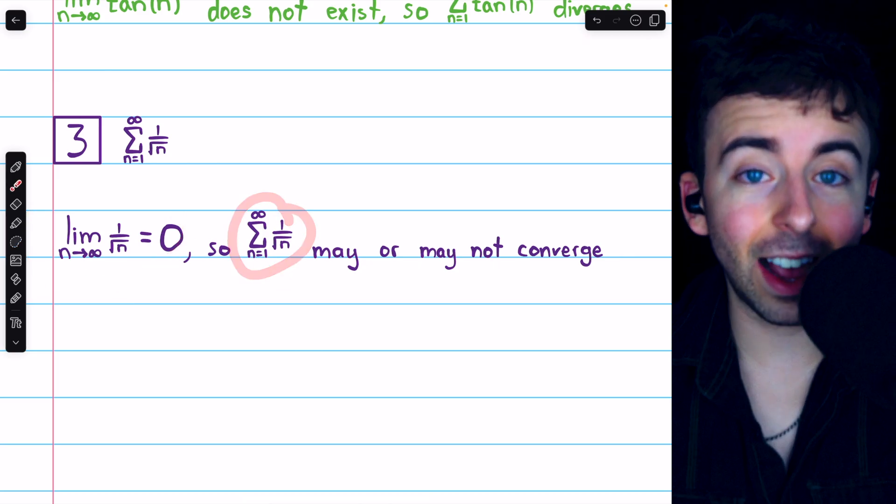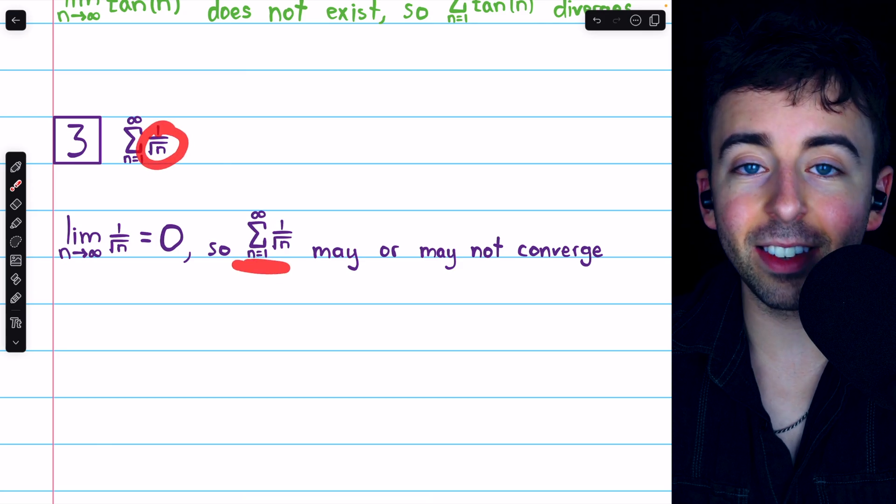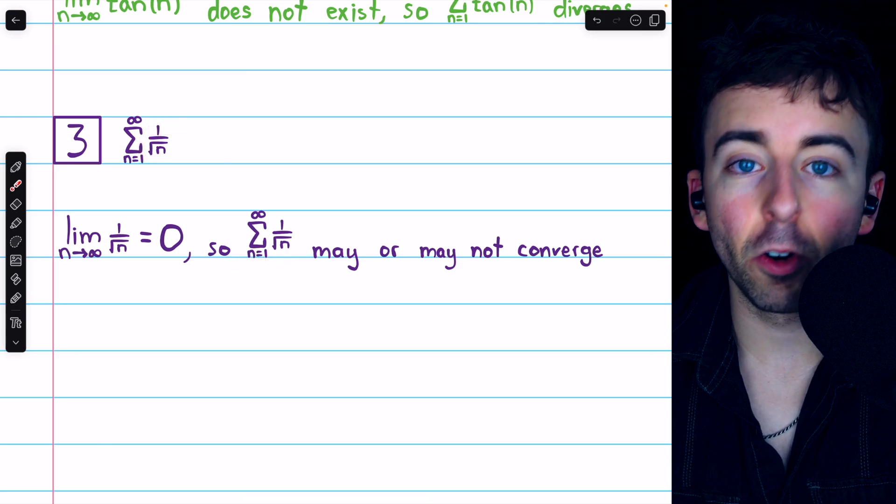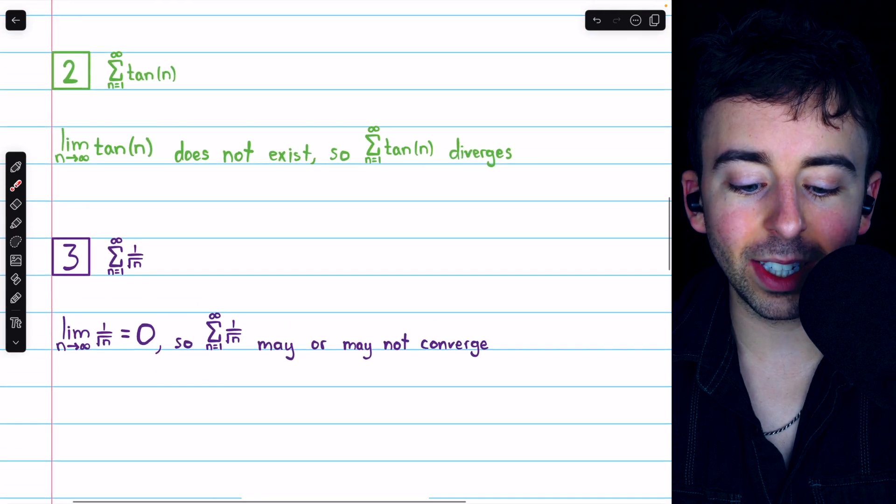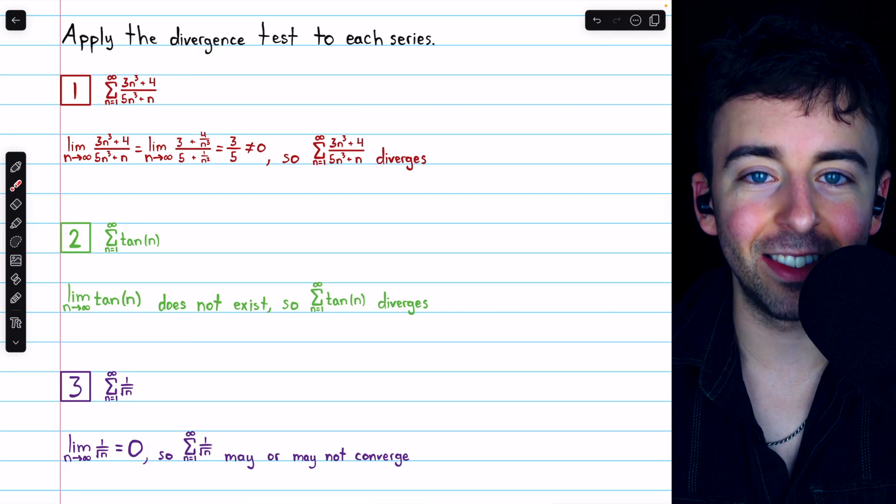Now, as it turns out, this series does actually diverge. So even though its terms approach zero, it is a divergent series. Remember, the divergence test isn't going to catch every divergent series, but it does a pretty good job of catching the easy ones.